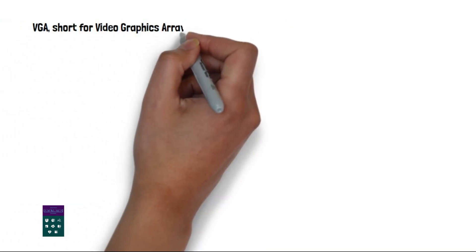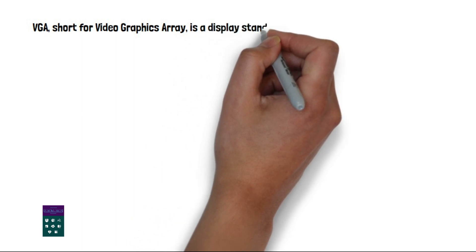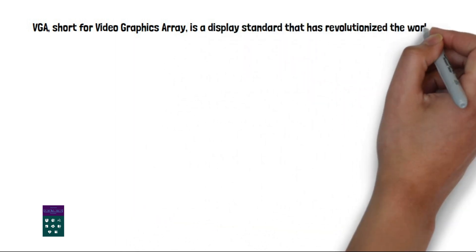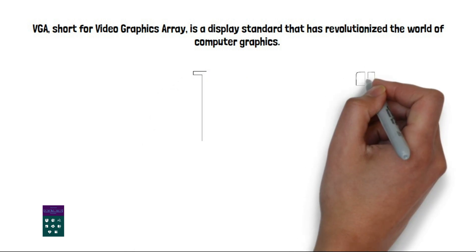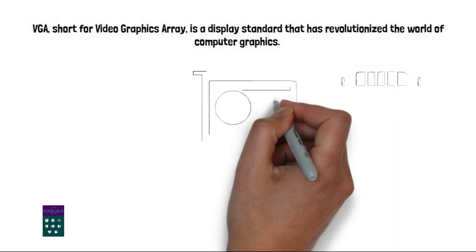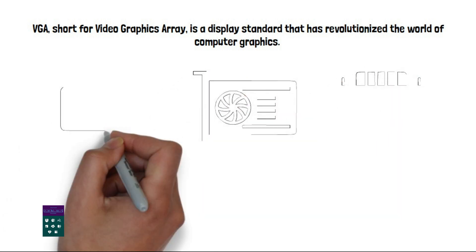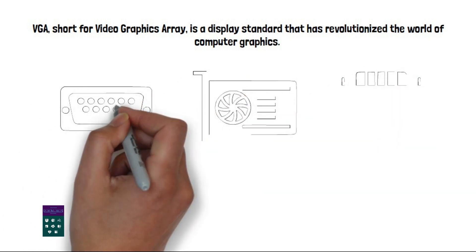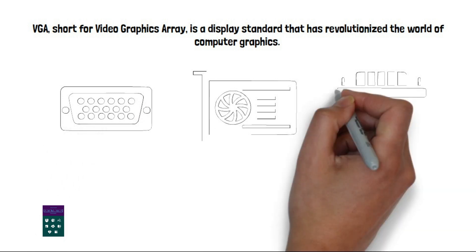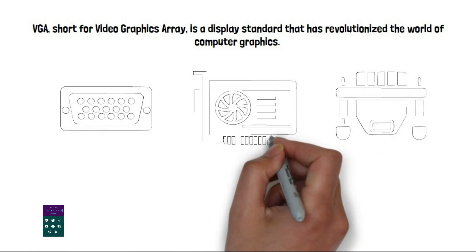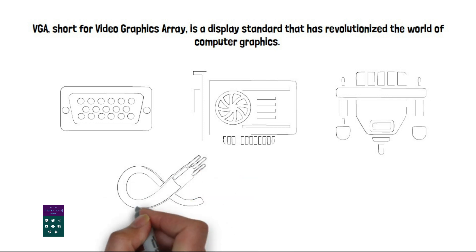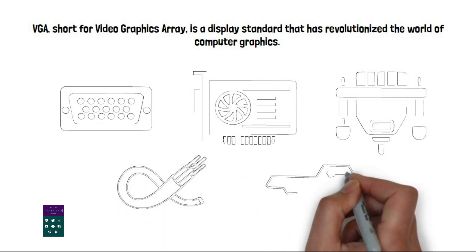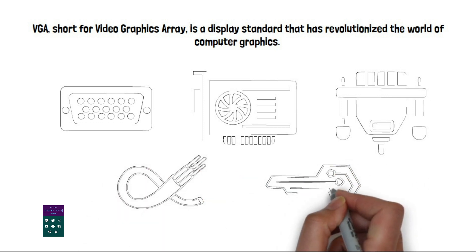VGA, short for Video Graphics Array, is a display standard that has revolutionized the world of computer graphics. It refers to both the video hardware and the display mode implemented by most computer systems. VGA is responsible for delivering crisp and vibrant images to our computer screens, allowing us to enjoy games, movies, and all the cat videos the internet has to offer.